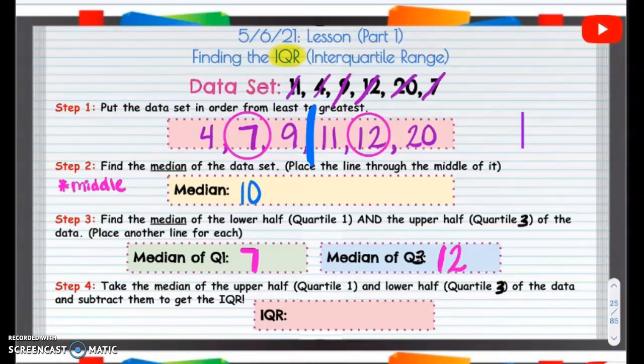So now, we are going to take the median of quartile 3, and we're going to subtract quartile 1. So 12 minus 7. So we're going to take this 12, and we're going to subtract 7. Well, from 7 to get to 12, 7, 8, 9, 10, 11, 12, you get 5.